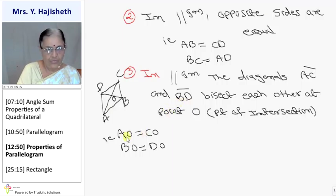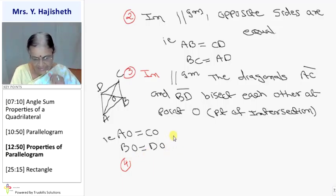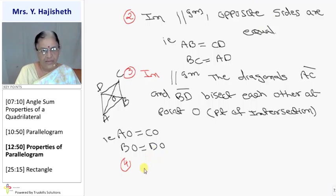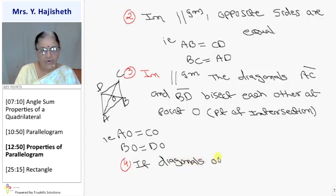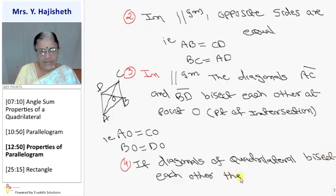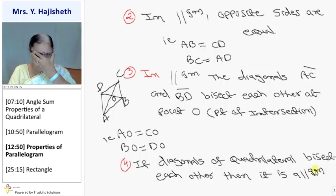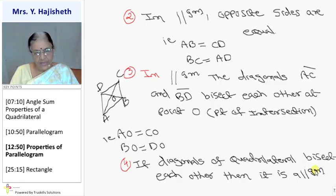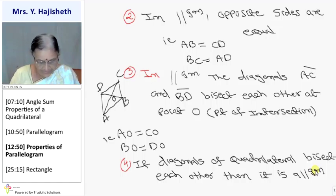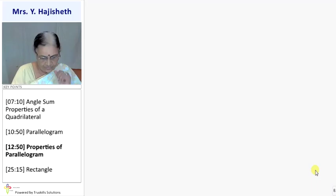Property number 4 is the converse of property 3: if the diagonals of a quadrilateral bisect each other, then it is a parallelogram. A quadrilateral satisfying any one of the properties of a parallelogram will be a parallelogram.